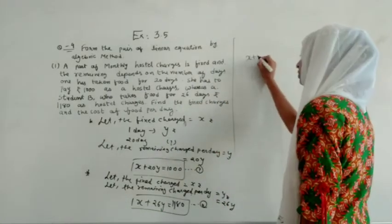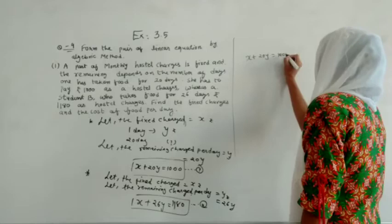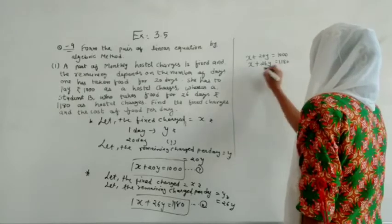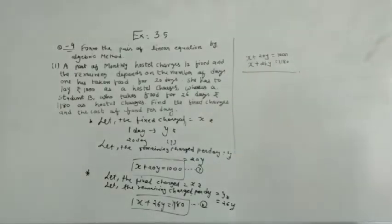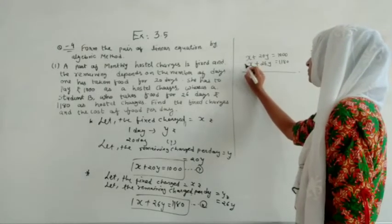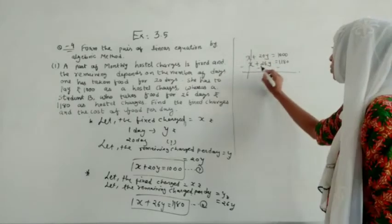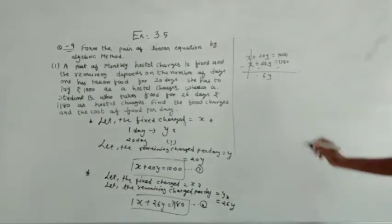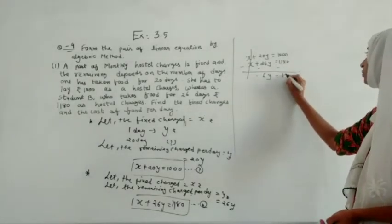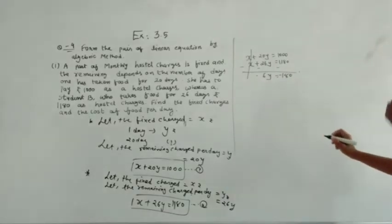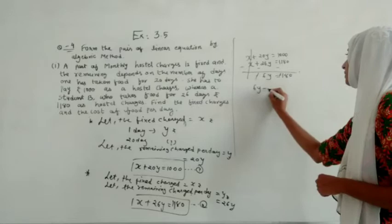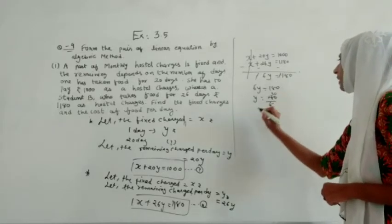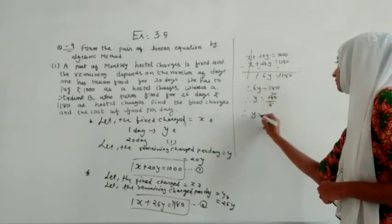As I said, this is originally a cross multiplication question, but we are doing the elimination method because no specific method is required. The coefficient of X is the same in both equations, so we change the sign. Subtracting: minus 26Y plus 20Y gives minus 6Y, and 1180 minus 1000 gives 180, so 6Y equals 180, which gives Y equals 30 rupees.